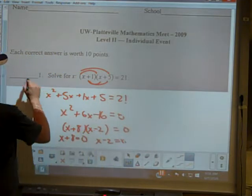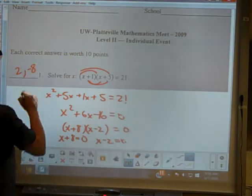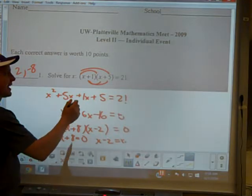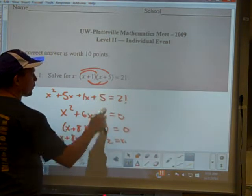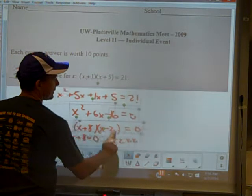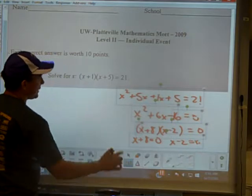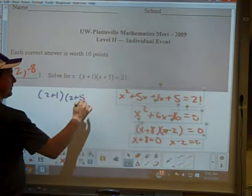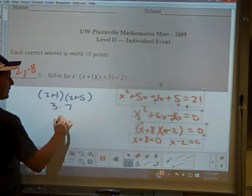So, the answers are 2 and negative 8. And the big deal with this problem is probably taking the time and checking that these work. Alright? Because you've got 30 minutes and often you're sitting at the end wondering, am I correct? You don't have to write it out, but you can quickly check it. 2 plus 1 times 2 plus 5. 3 times 7, 21.